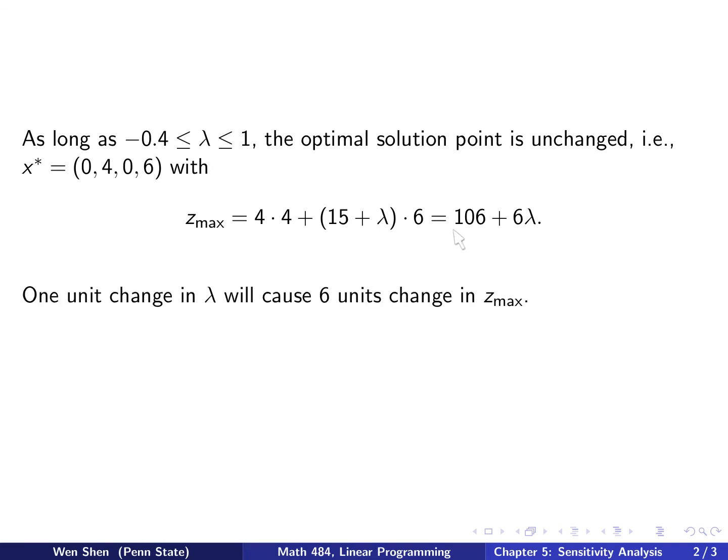So 106 was the previous optimal value, and if you don't add lambda, that's your optimal. If you add a lambda, you see that 6 times lambda enters the expression, so this means 6 is kind of the rate, how it responds to the change in lambda. If you change one unit in lambda, it will cause a 6 unit change in the Z max value.